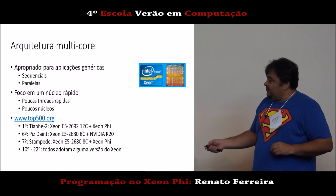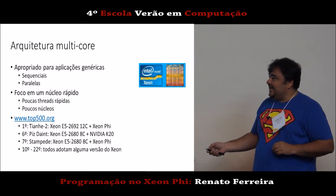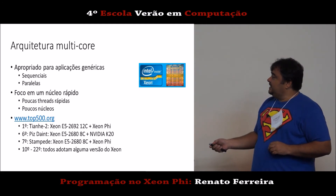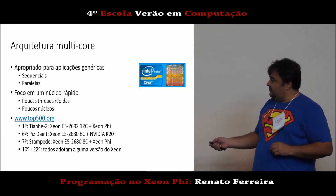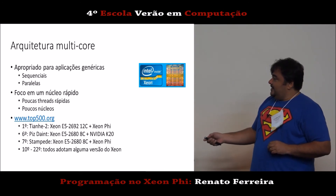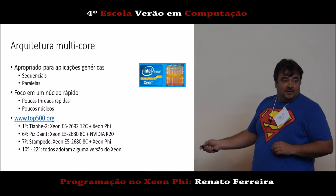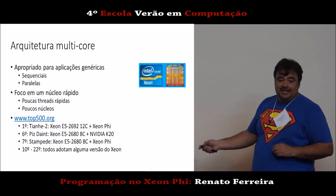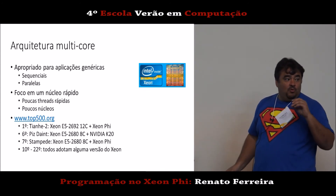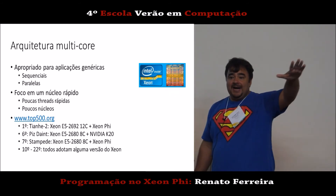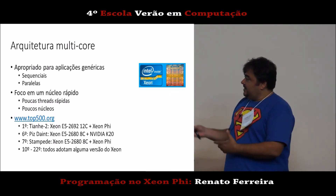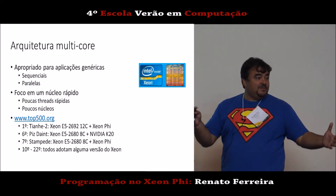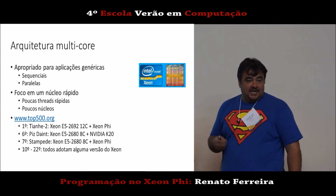Voltando: a sétima máquina do mundo é a Stampede, uma máquina numa universidade no Texas, parecida com a de cima, só que rodando o Xeon Phi. Depois da sétima, as três seguintes no Top 10 estão rodando o Xeon. E até a vigésima segunda máquina, o processador é o Xeon também. Das 22 máquinas mais rápidas do mundo, 15 são movidas a Xeon.